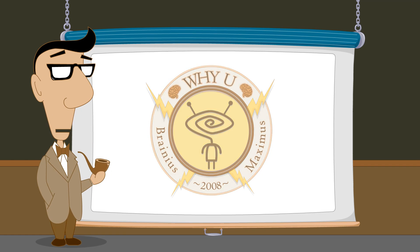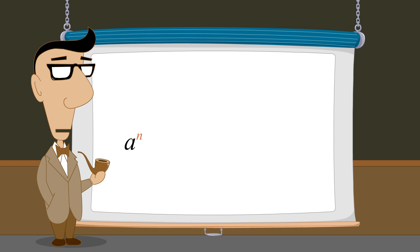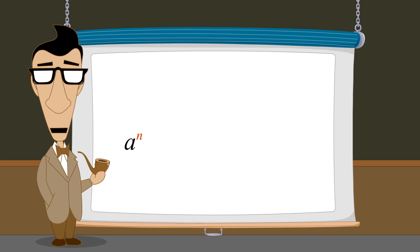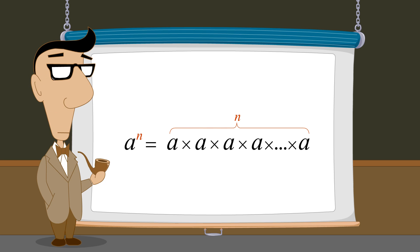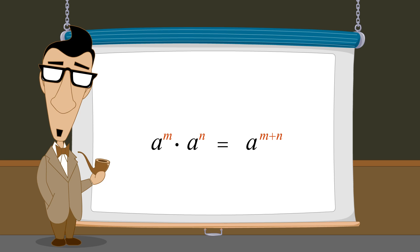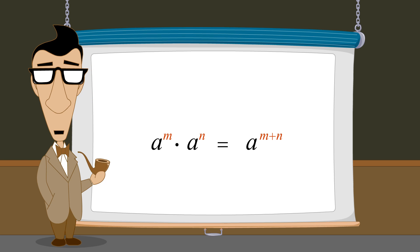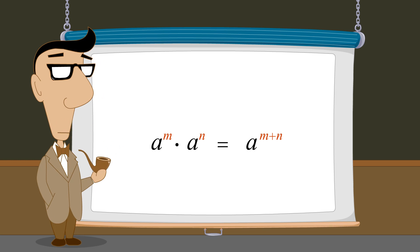We have seen that any number a raised to the nth power where n is a positive integer is equivalent to n a's multiplied together. We also saw that to multiply exponential expressions with the same base we add their exponents. In this lecture, we will show how to use these rules to write exponential expressions in their simplest possible form.